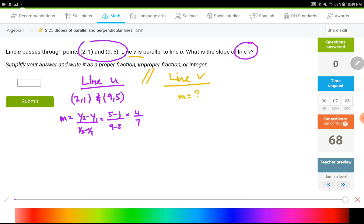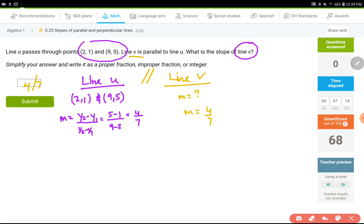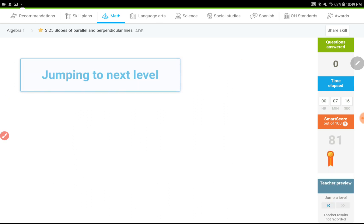So the slope of line U is 4 over 7. Since the lines are parallel, their slopes would be the same. So this one would have the same slope, 4 over 7.